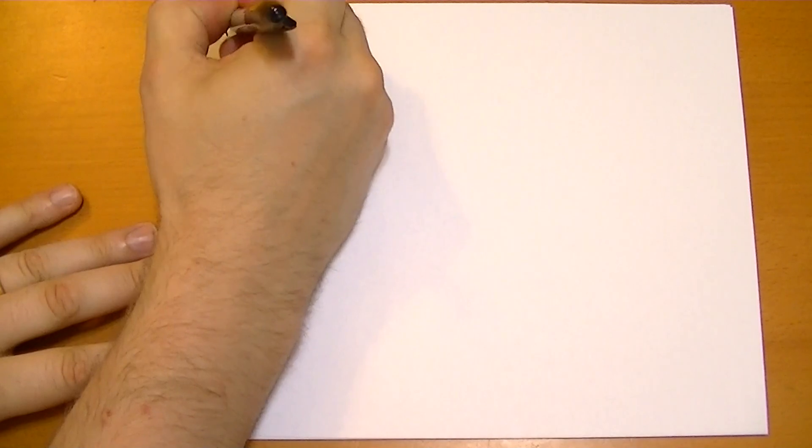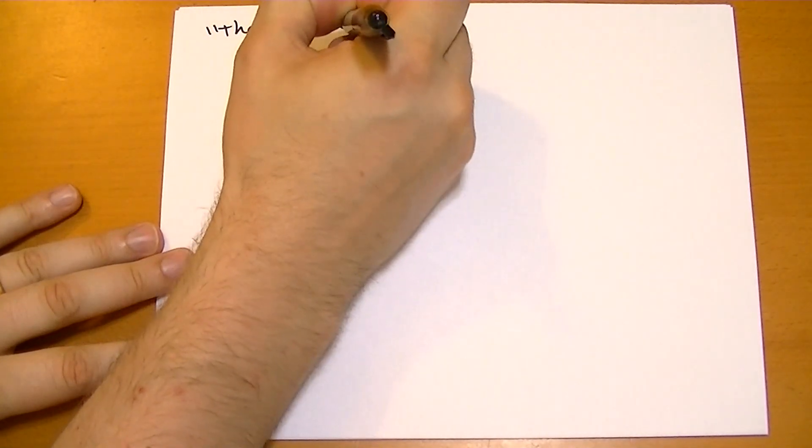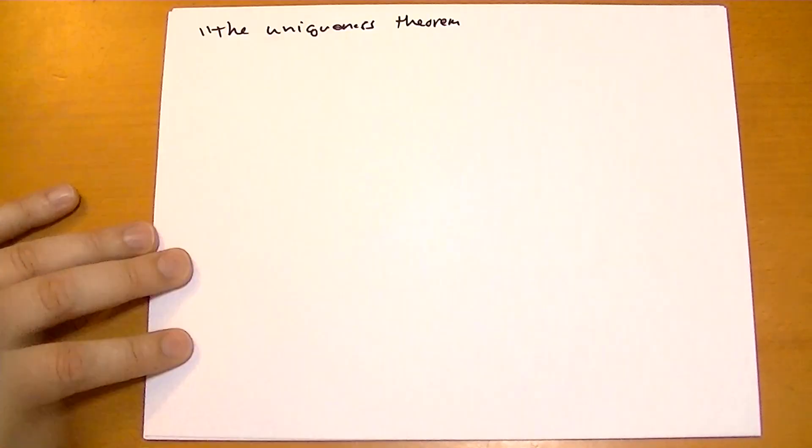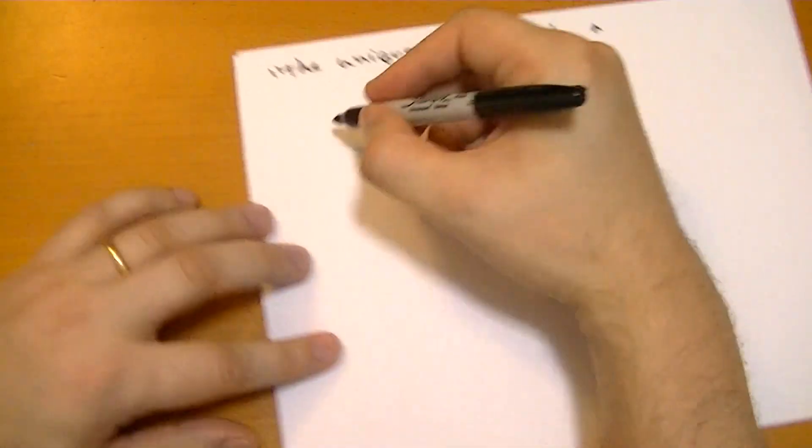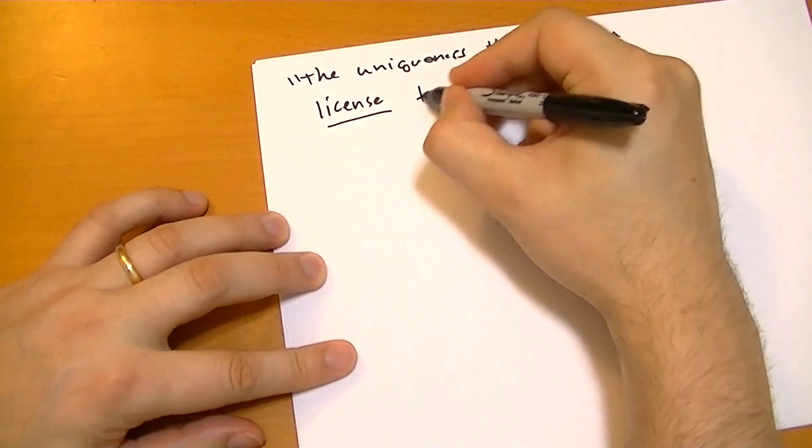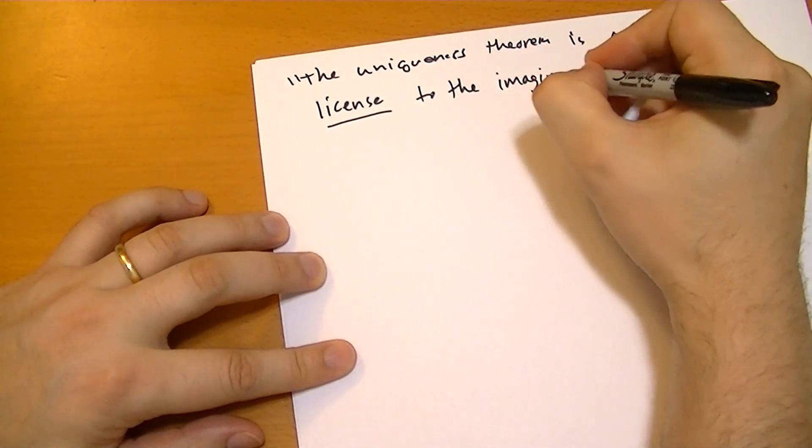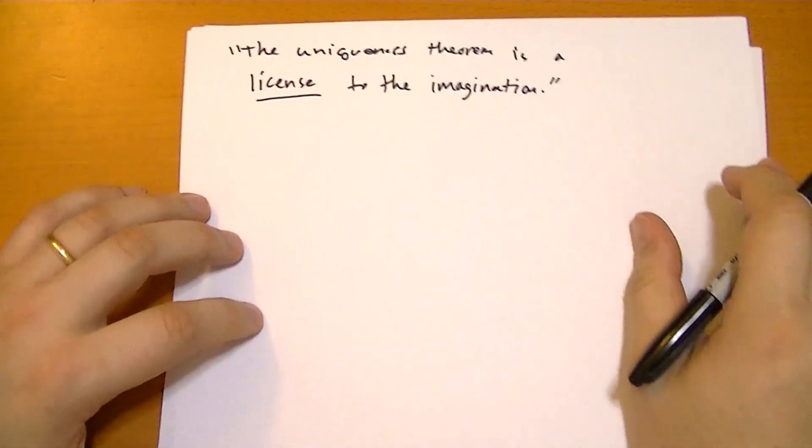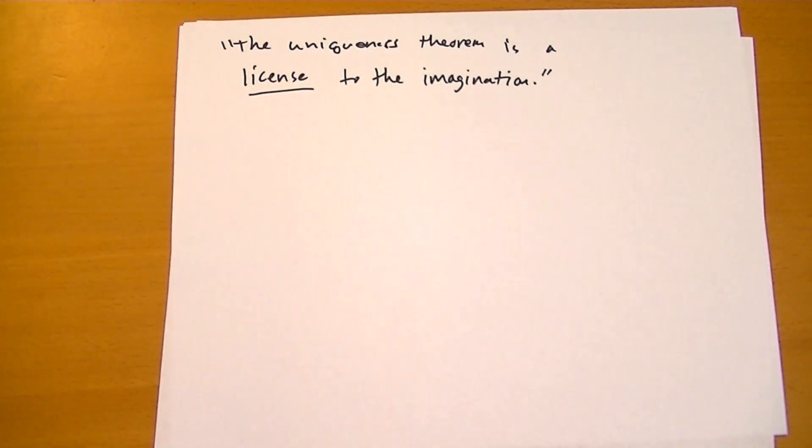I like this quote: the uniqueness theorem is a license to the imagination. When you're solving these problems using the uniqueness theorem, all you have to do is find a solution. It doesn't matter what method you use. As long as the boundary conditions are the same, then it's a solution. It's the solution to the problem. How you get that solution is moot. It does not matter what method you use. As long as the solution satisfies the boundary condition and Laplace's equation, it's the solution.